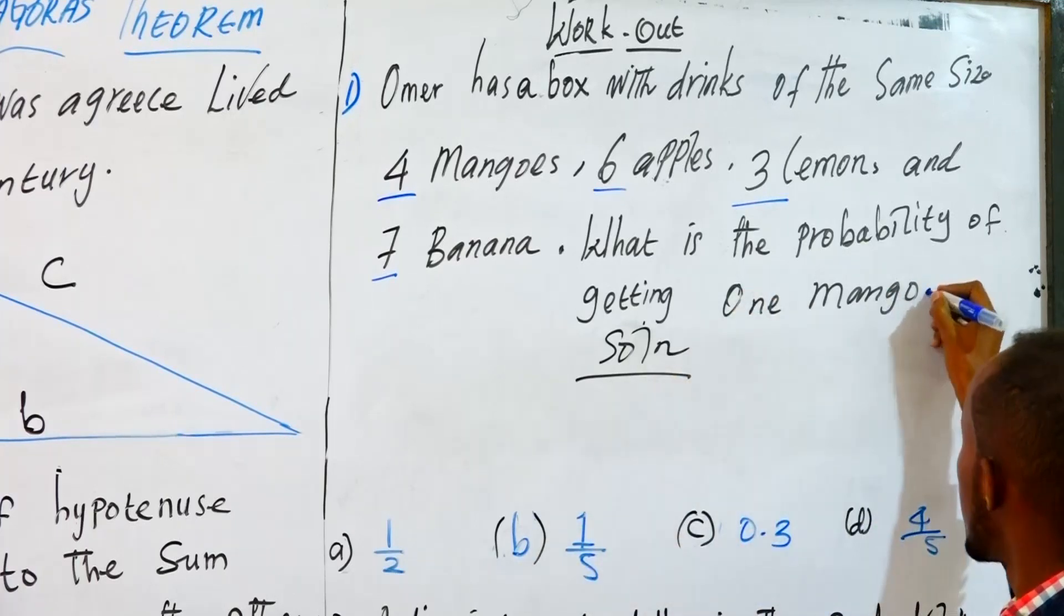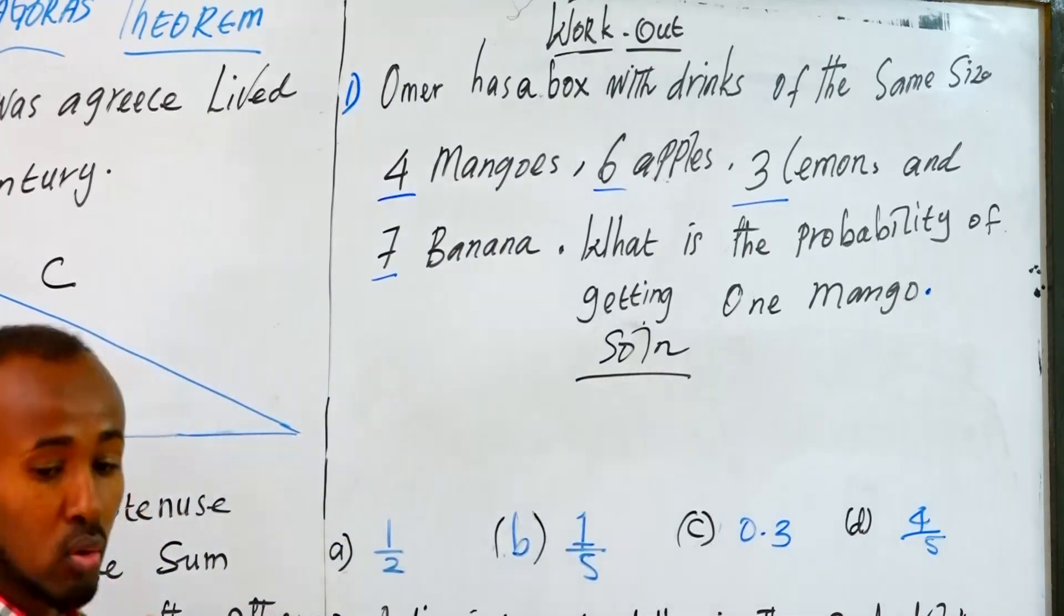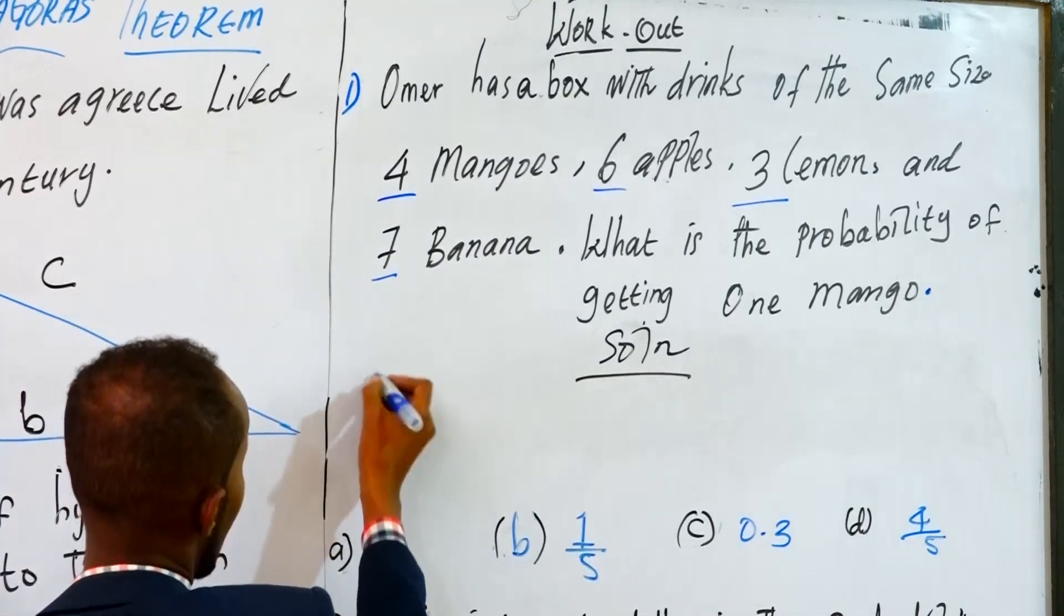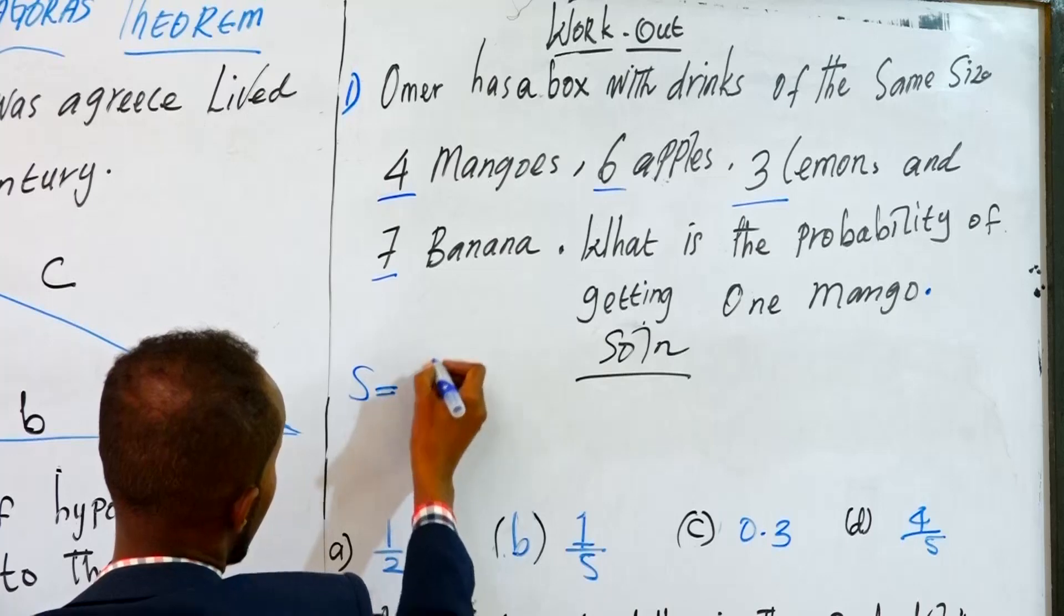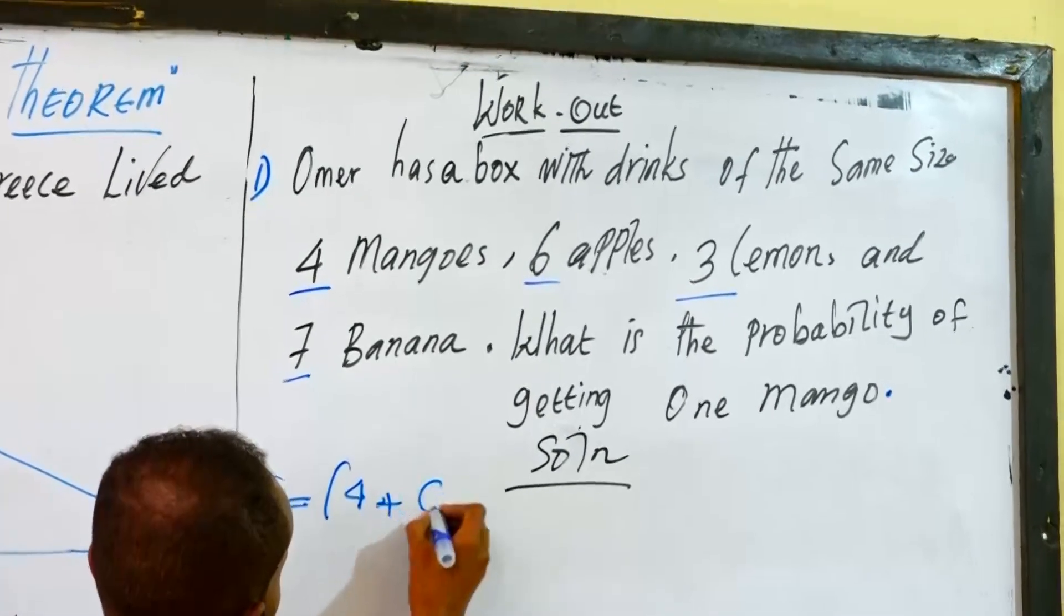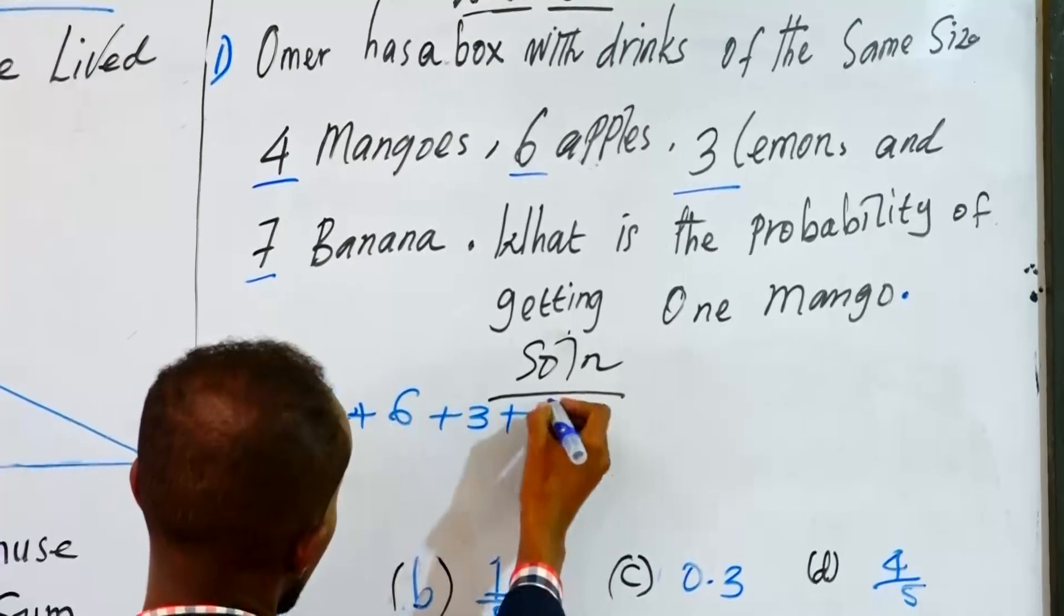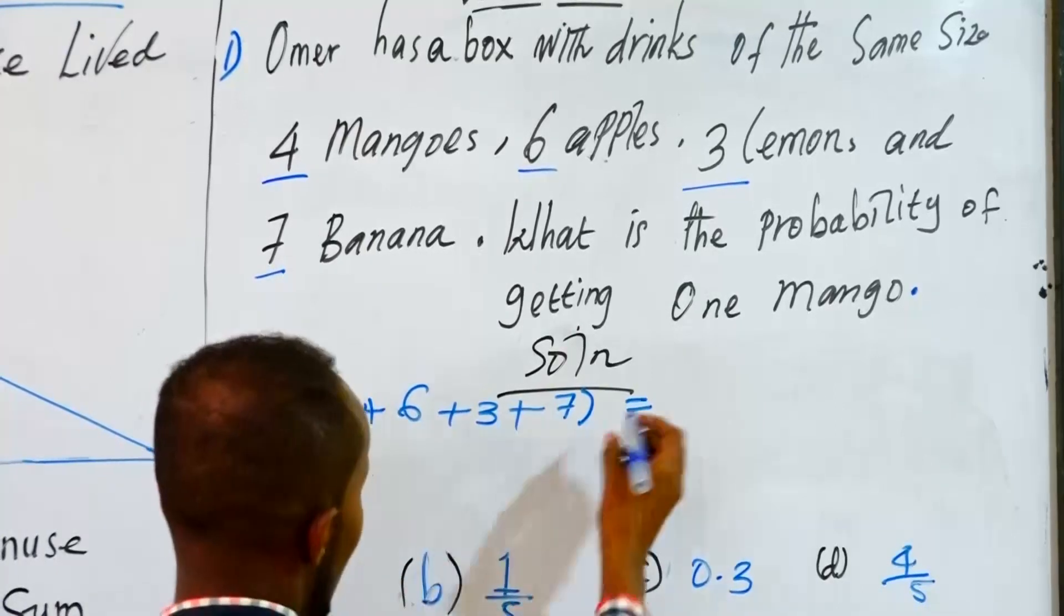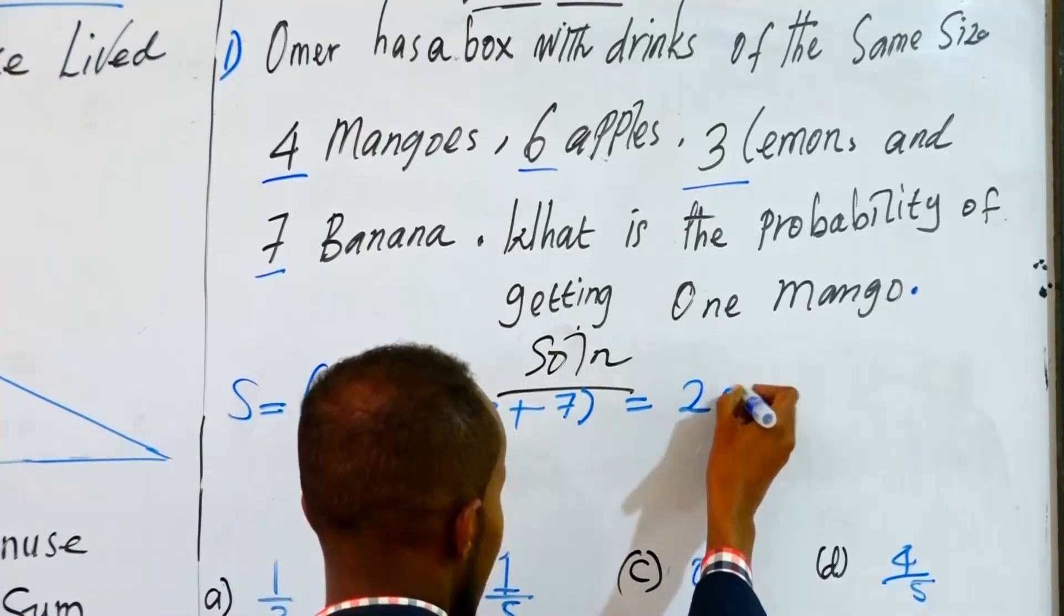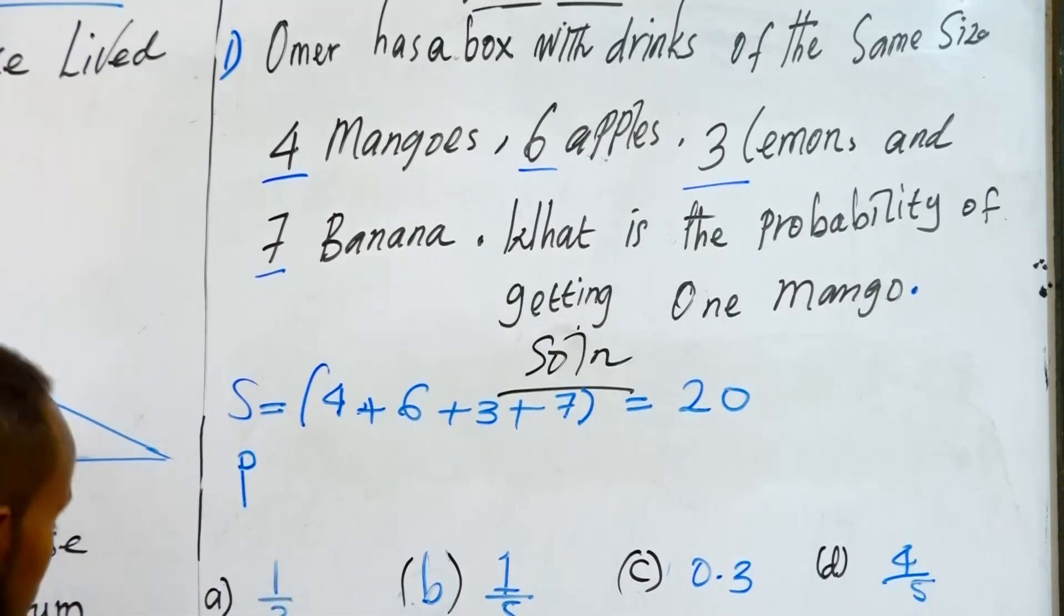This is the same size box. There are four mangoes and there are three lemons. This is the same size as the same size. When you give the probability of this, it means the probability of one mango.